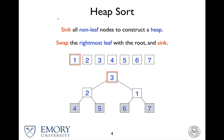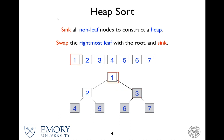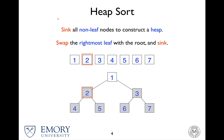The rightmost leaf is 1, which gets swapped to the root node. It has to be sunk, so 1 and 2 get swapped. The last thing is we swap the root node and the rightmost, which in this case is 1 and 2. So we do the swap. And now everything is in order — once we walk through the entire tree, we have a list that is sorted in ascending order.